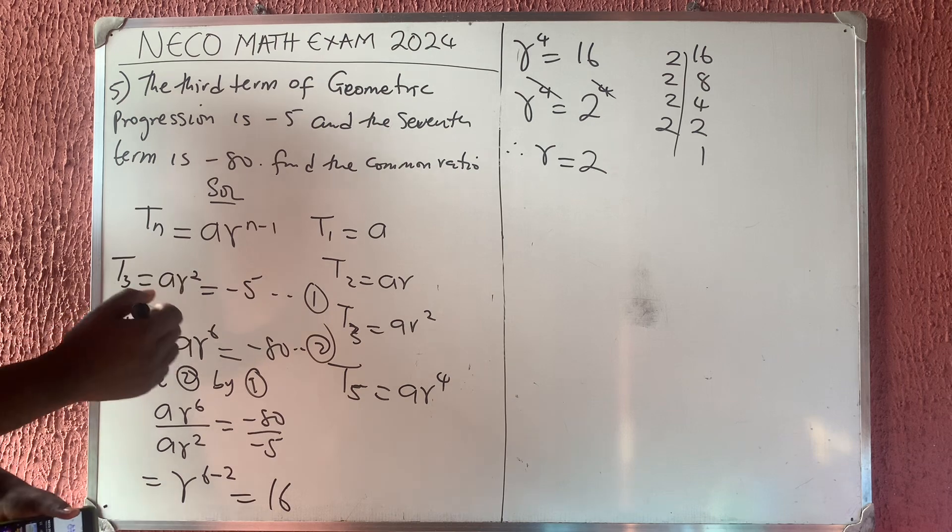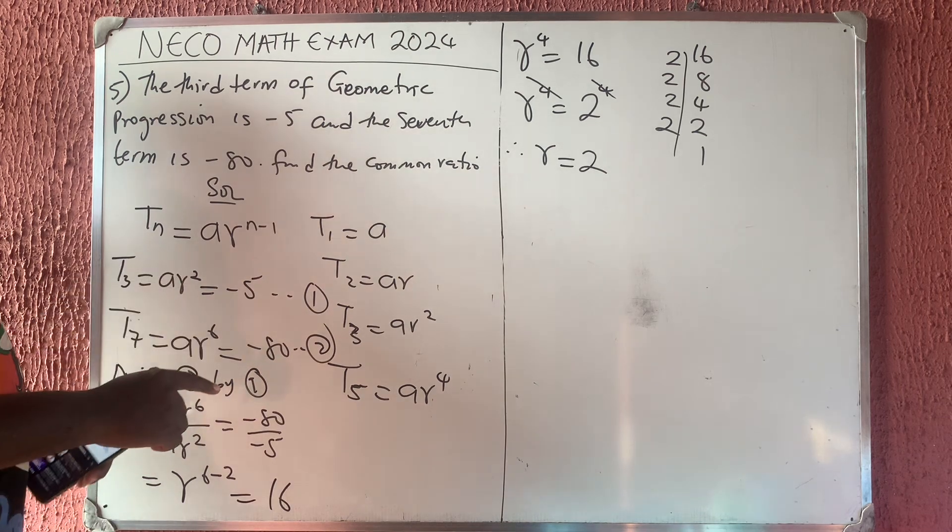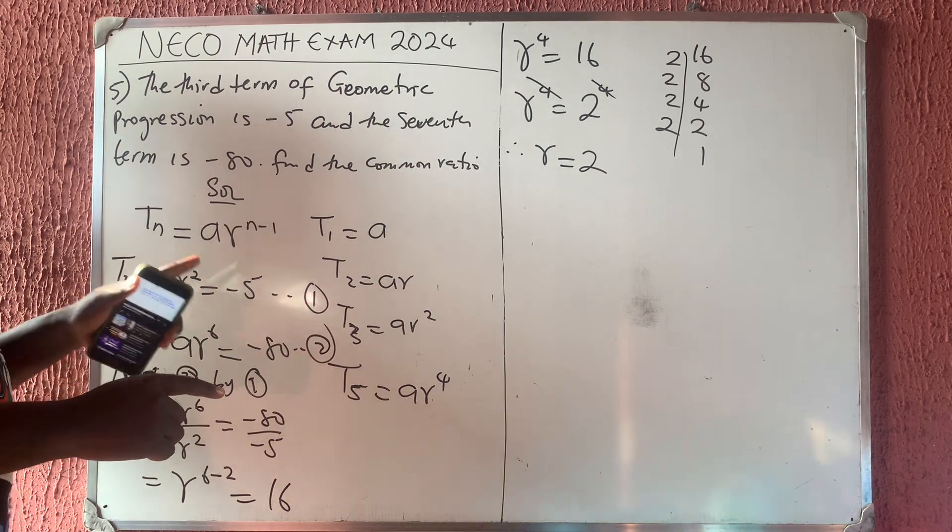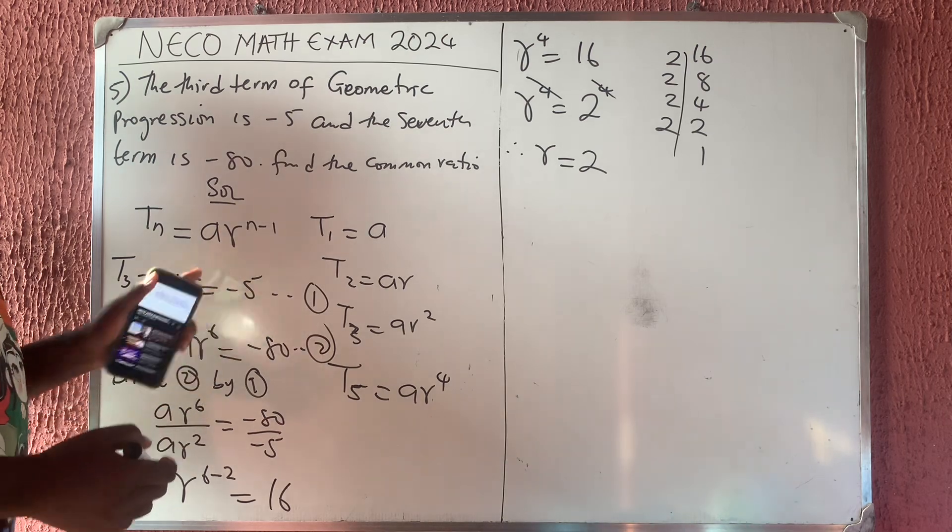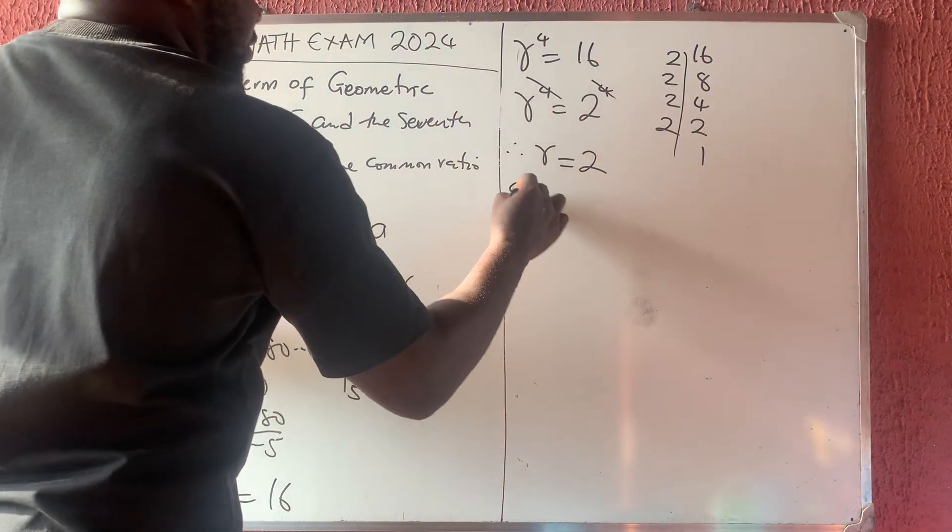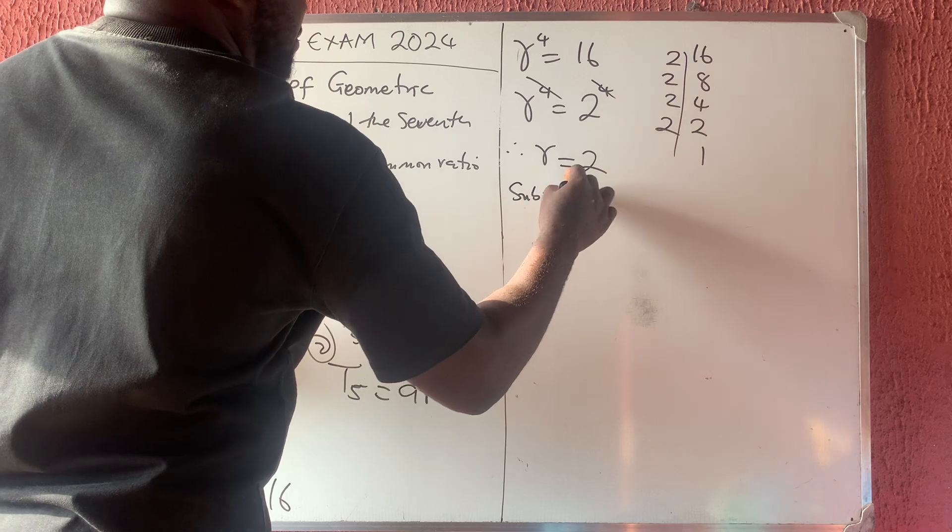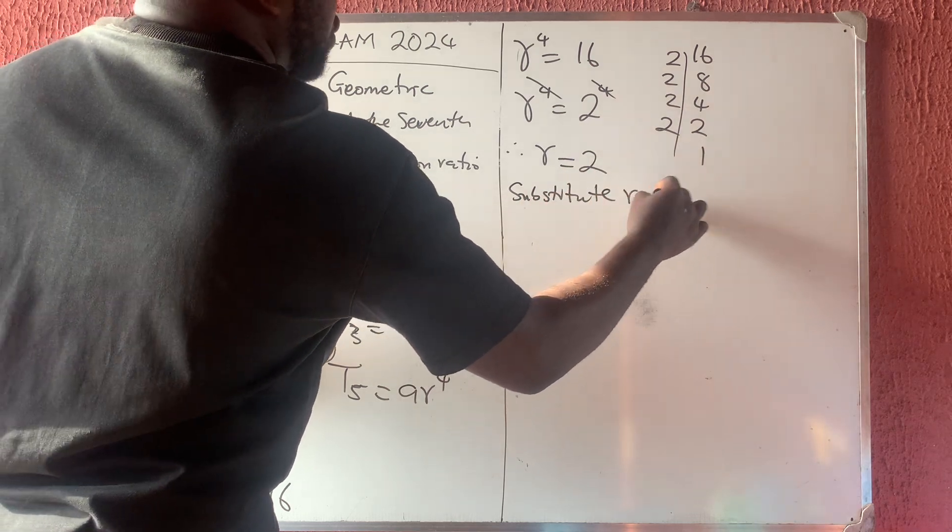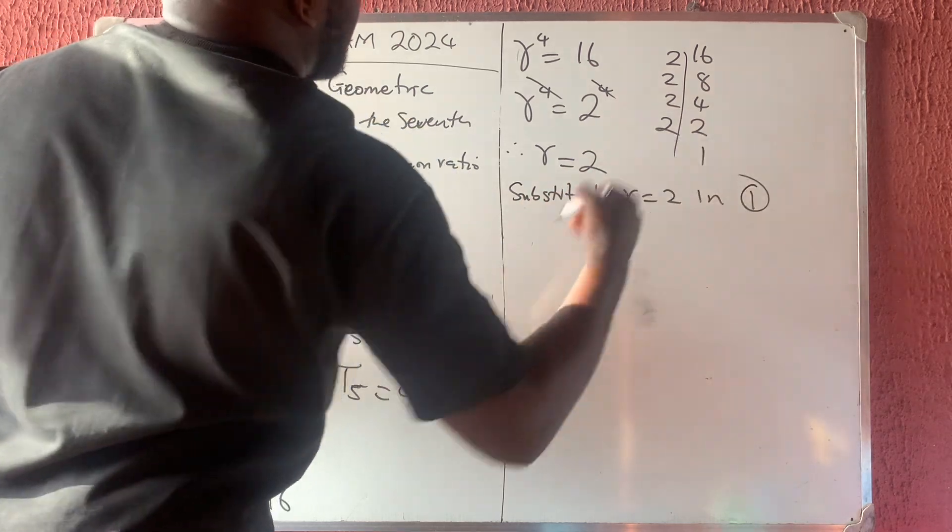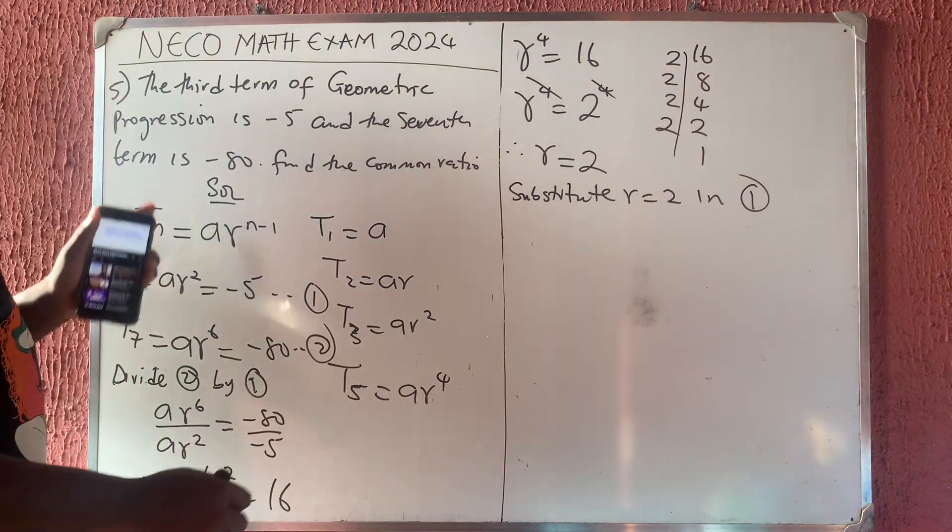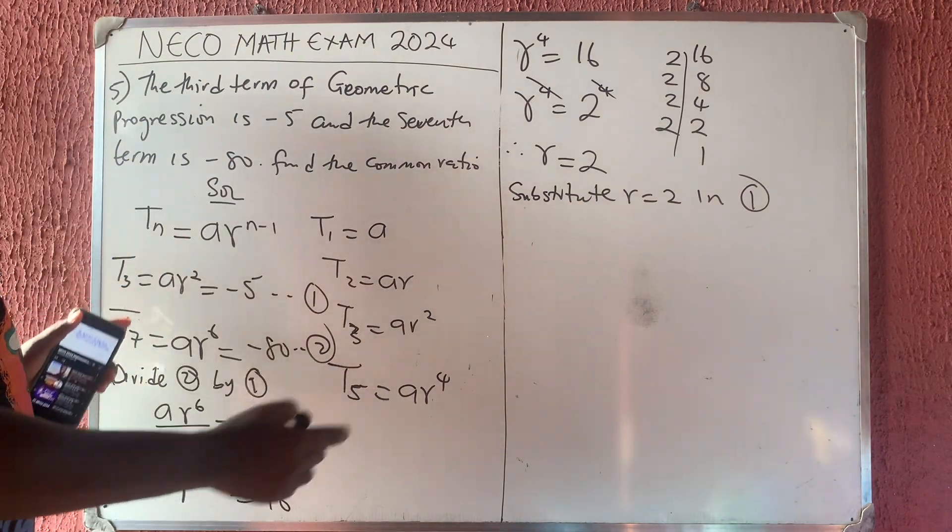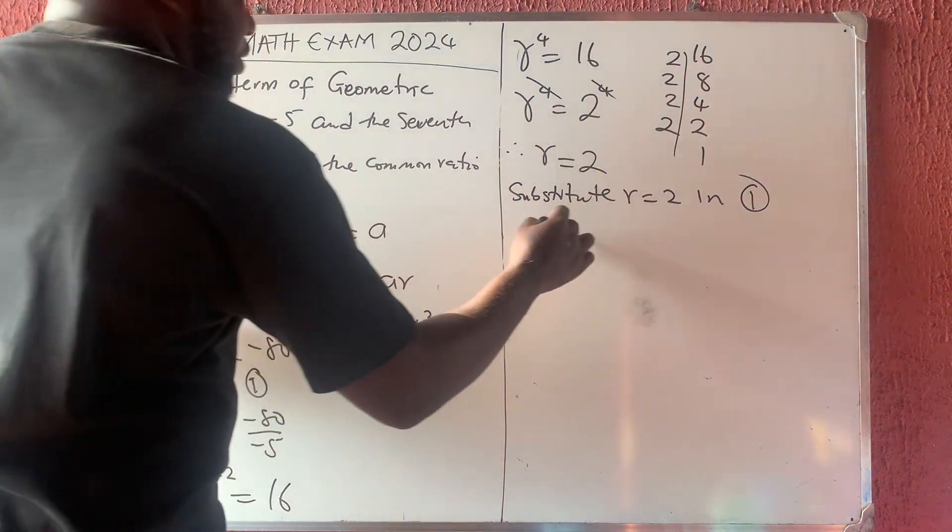Now, maybe they asked you to find the first term. To find the first term now is to substitute in any of the equations. So we can say, substitute R to be equal to 2 in equation 1 so that we can get A. They didn't say we should find it here. I'm just trying to show you in case of necessity.